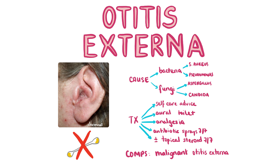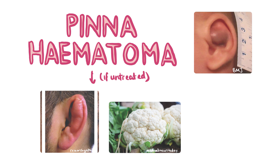Otitis externa can lead to complications such as malignant otitis externa. Patients with diabetes or who are immunocompromised are at increased risk. In malignant otitis externa, the infection invades bone and causes osteomyelitis. Trauma to the ear resulting in pinna haematoma can become an ear deformity known as cauliflower ear if it's not urgently drained and compressed to prevent reaccumulation of blood. Deformity occurs because cartilage depends on overlying perichondrium for nutrients; in pinna haematomas, blood collects between the cartilage and the perichondrium, starving the cartilage of oxygen and leading to cell death and cartilage necrosis.